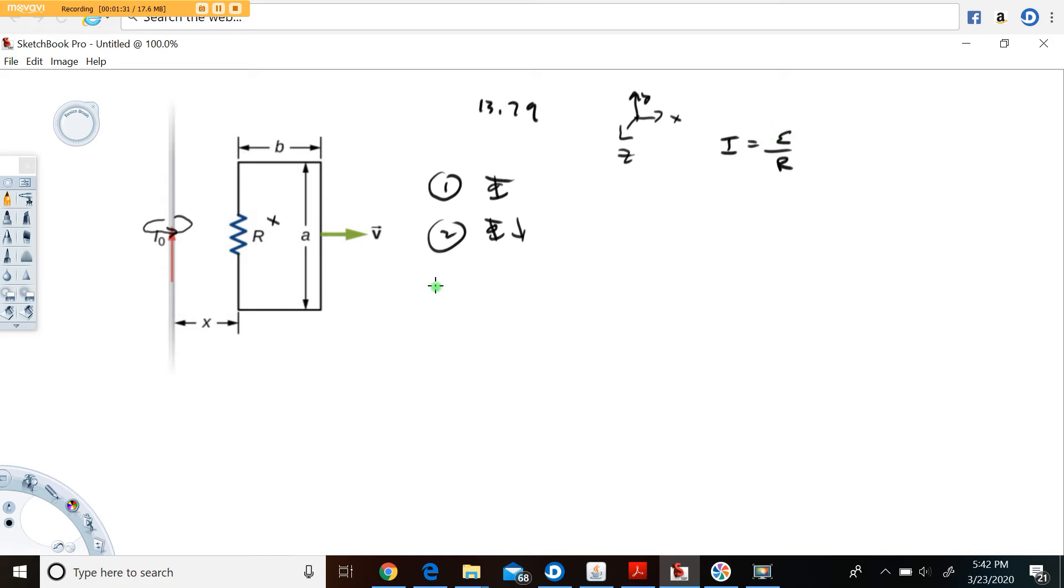This we're going to get from Faraday's law of induction, that induced emf is equal to d phi dt. But before we can differentiate, you're going to need an expression for the magnetic flux through the loop.